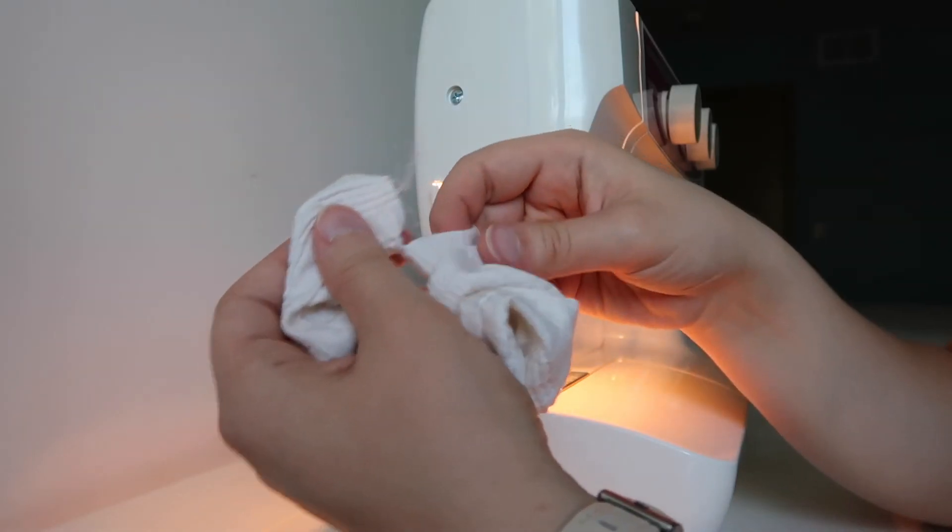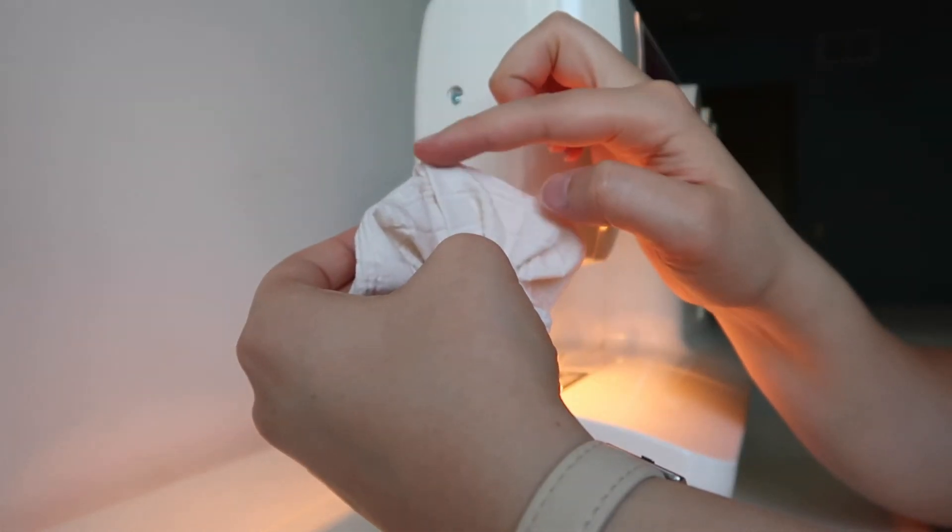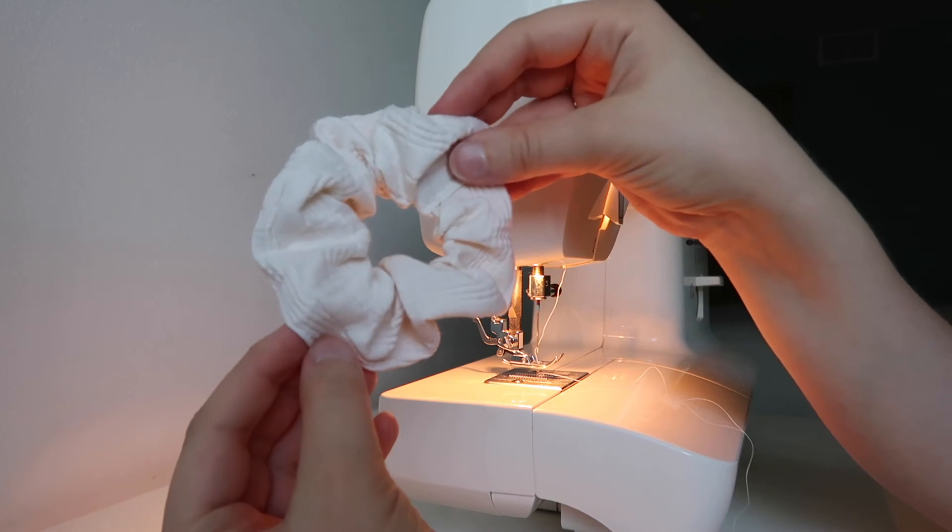And then take the clean end of the scrunchie and feed it over the raw end and sew that down with a straight stitch. And your scrunchie is complete.